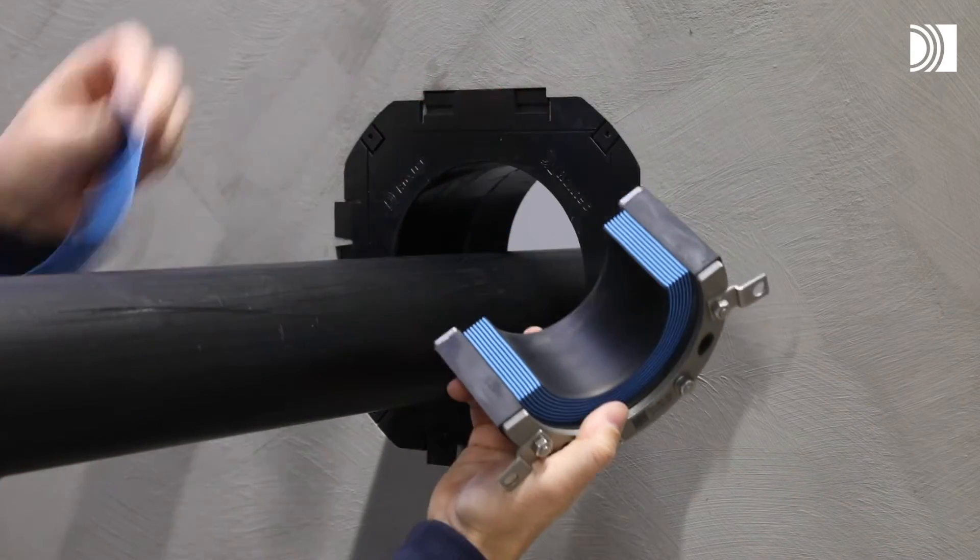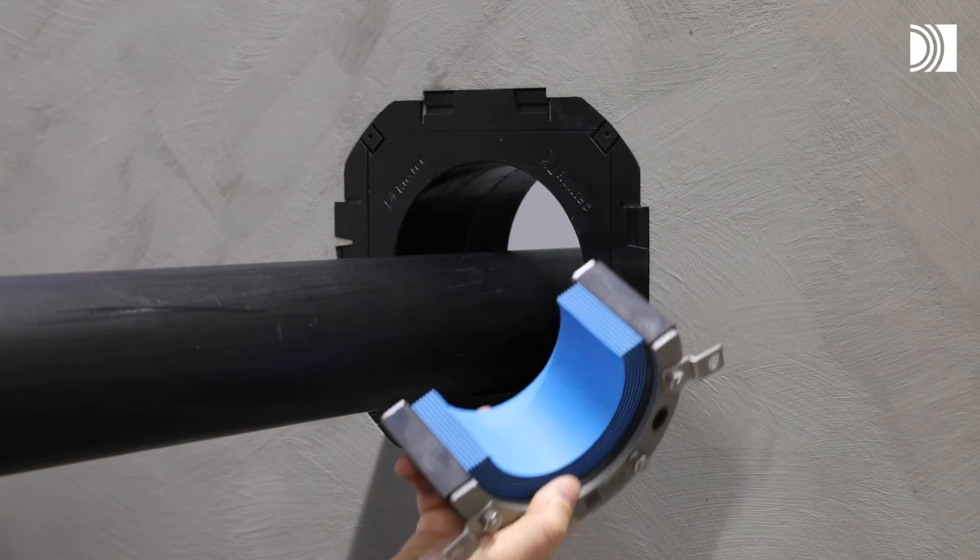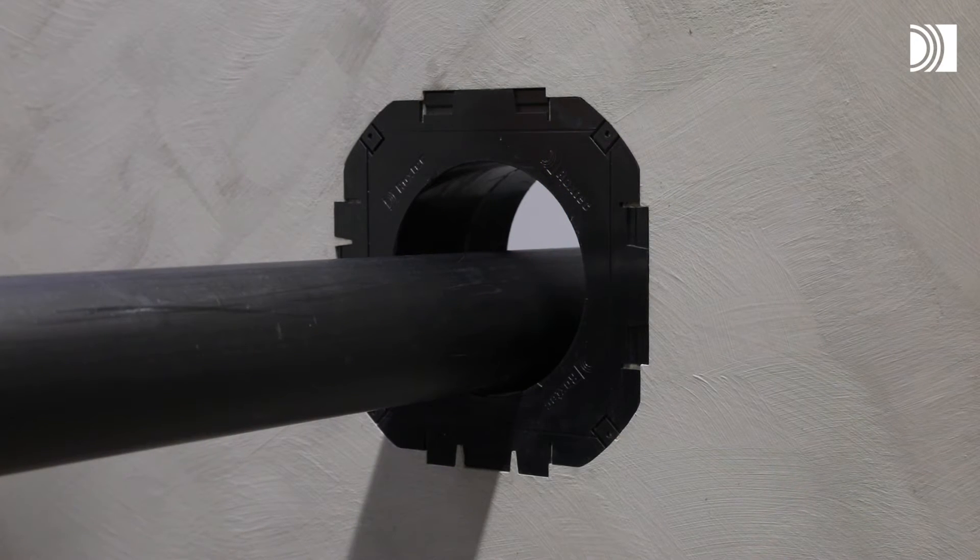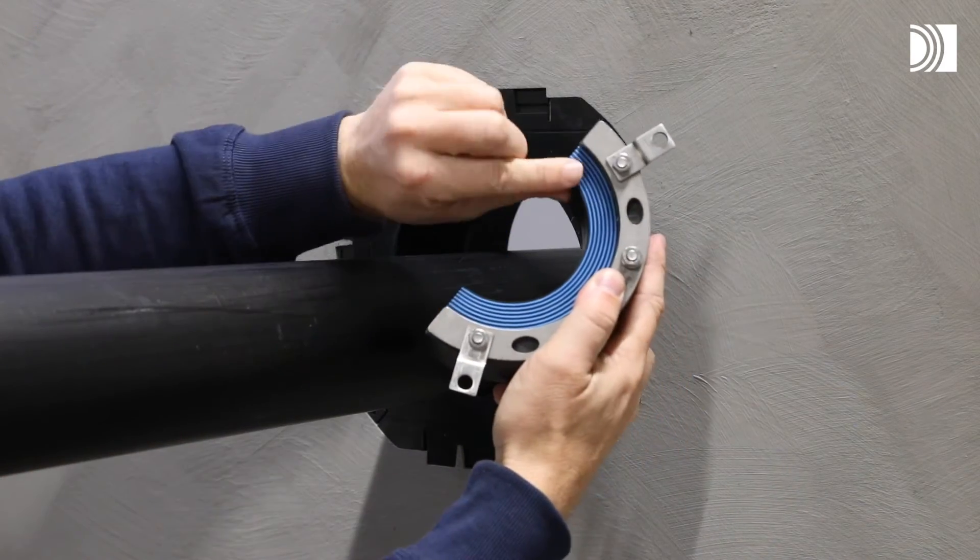Adapt the seal by peeling off layers. The number of layers may not differ by more than one between the corresponding seal halves. Do not remove the last layer.